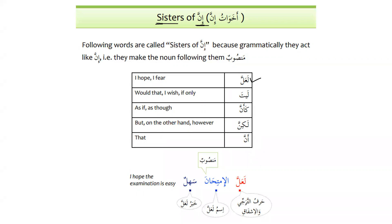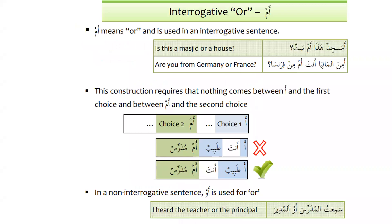La'alla gives the meaning of hope and fear and has the same function as inna. After la'alla, the noun that was subject becomes ismu la'alla and the predicate becomes khabaru la'alla. For example, 'la'alla al-imtihana sahilun' — I hope the exam is easy; al-imtihana is mansoob as ismu la'alla. Whether it expresses hope or fear depends on context, but in the Quran la'alla is generally translated as 'perhaps'.